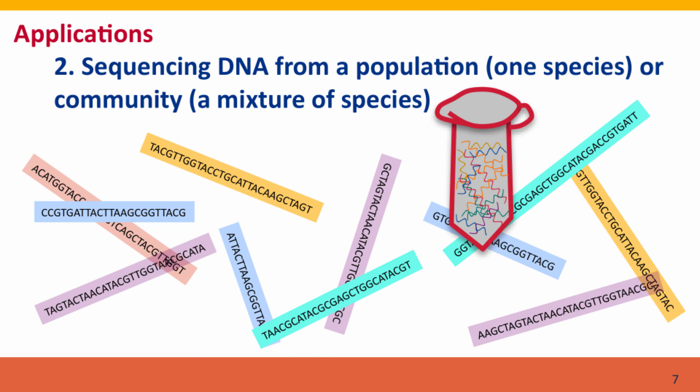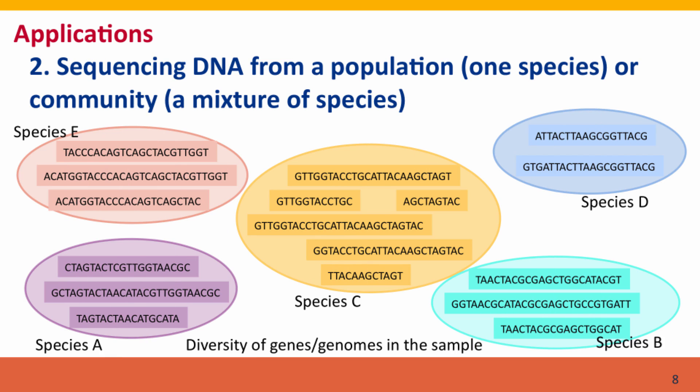A second application is that rather than sequencing one genome, we can sequence a mixture of DNAs from different sources — DNAs from all the members of a population or from all the species in a community. For instance, you can scrape the bacteria off your teeth and extract the DNA from this mixture of bacteria and sequence it. This is a study called metagenomics, studying the phenomenon of what's called our microbiome, the ecological communities of bacteria that live on us. When these sequences are analyzed, they can be grouped into particular groups that tell you the kinds of organisms present in the sample, even though you don't have any way to directly study these organisms.